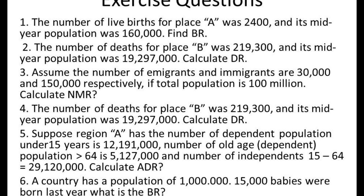Question two: the number of deaths for Place B was 2,219,300, and its mid-year population was 90,297,000. Calculate the death rate.